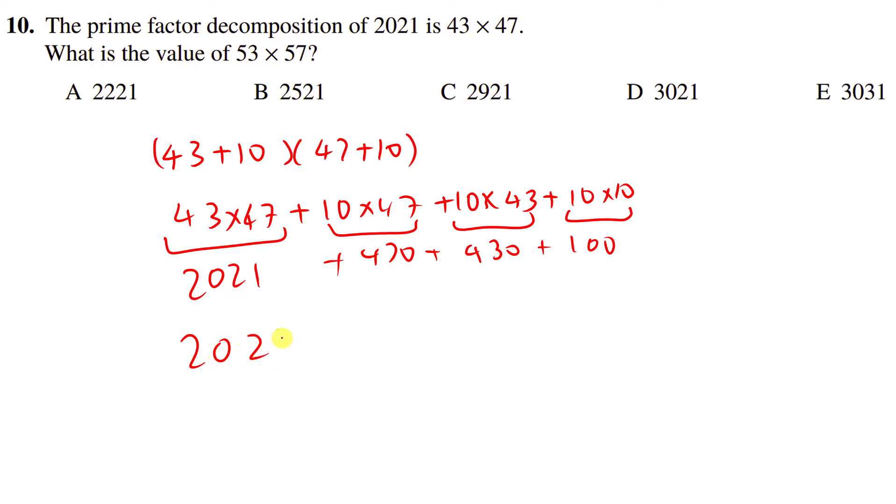And then we just add these all together. We have 2021 plus 900, 100, 1000. So it's just 3021.